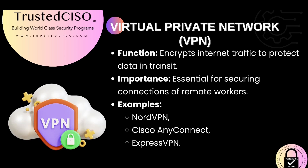A virtual private network, or VPN, encrypts internet traffic to protect data in transit — all data is encrypted point to point. VPNs are essential for securing connections, especially for remote workers accessing corporate resources. Examples of VPN solutions include NordVPN, Cisco AnyConnect, ExpressVPN, and ProtonVPN. I like to use ProtonVPN — it's free. Proton also offers ProtonMail, which is encrypted email.